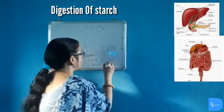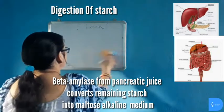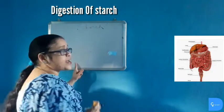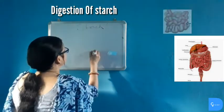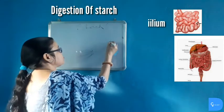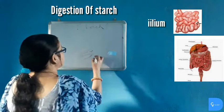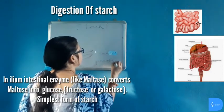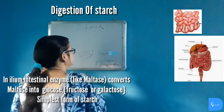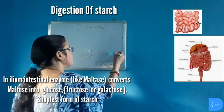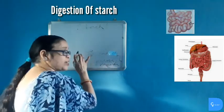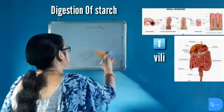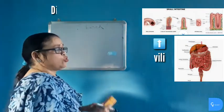The pancreatic amylase converts the remaining starch into maltose. From the duodenum, the carbohydrate reaches the ileum. In the ileum, complete digestion of carbohydrate takes place. Intestinal juices act on maltose, a disaccharide, and convert it into monosaccharides — glucose, fructose, and galactose. These are the simplest forms of carbohydrates. The complete digestion of carbohydrate is completed in the ileum, and is then absorbed — a process called assimilation.